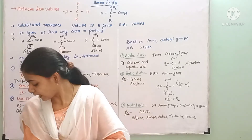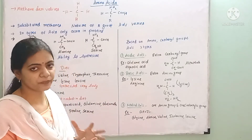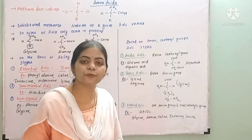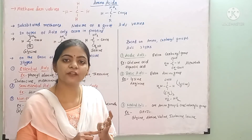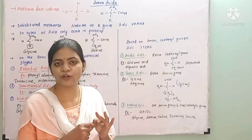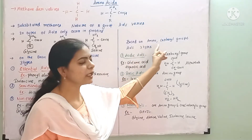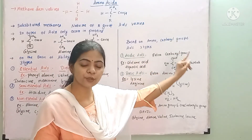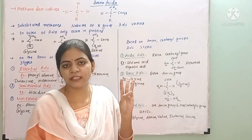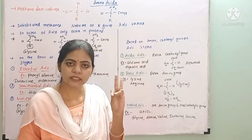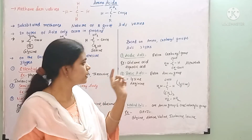Based on the amino group and carboxyl group, the physical and chemical properties of amino acids change. Depending on the number of amino groups and carboxyl groups, we have three types: acidic amino acids, basic amino acids, and neutral amino acids.